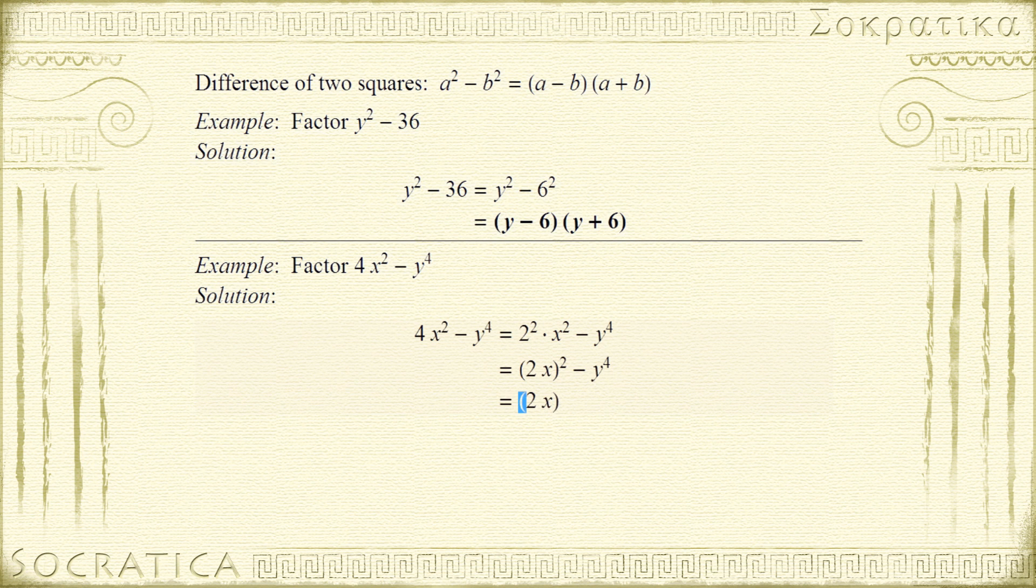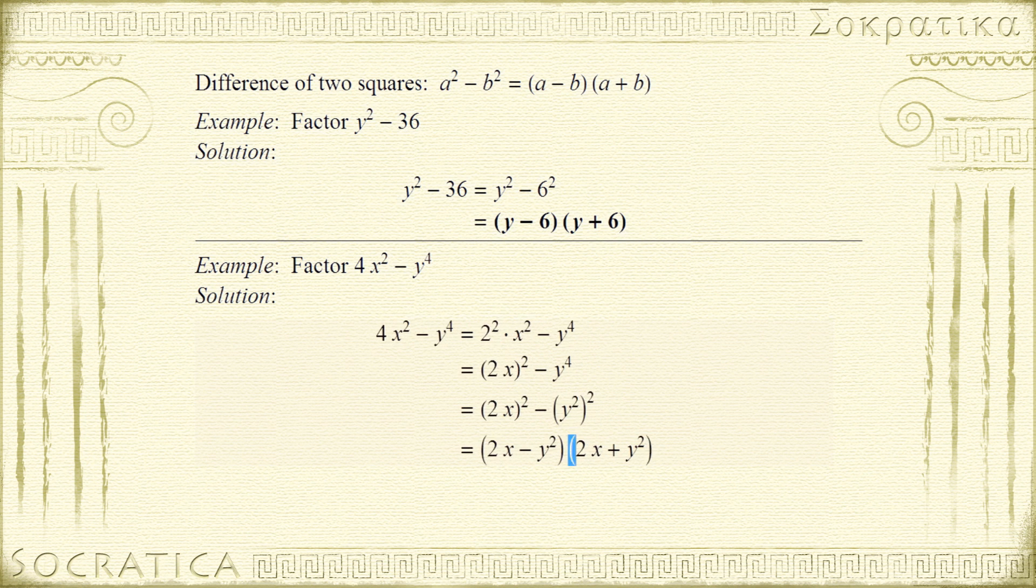Now let's look at the second term. y⁴ can be written as (y²)². And that's the trick I wanted you to see in this example. So we have (2x)² - (y²)². And that gives us (2x - y²)(2x + y²).